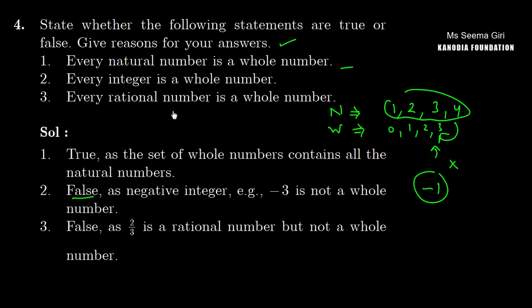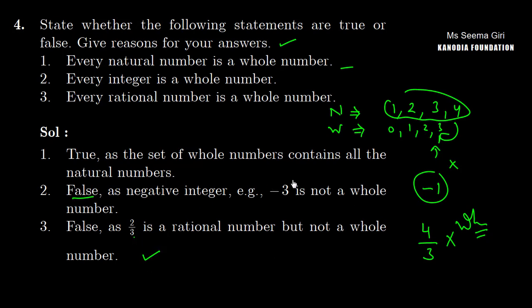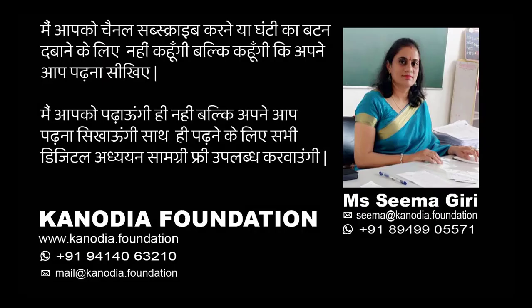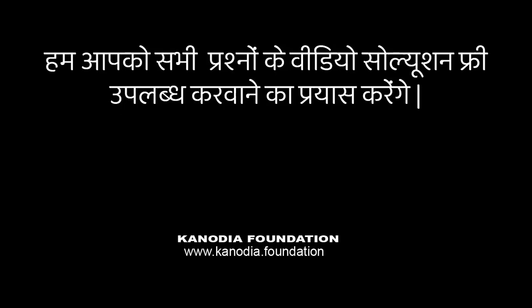Every rational number is a whole number. This is FALSE. Because a rational number like 4/3 or 2/3 is a rational number but it is not a whole number. So this statement is false.